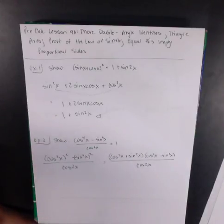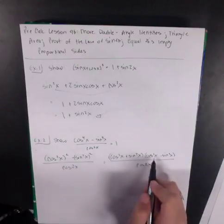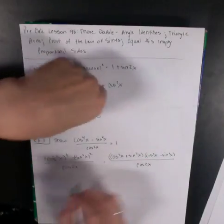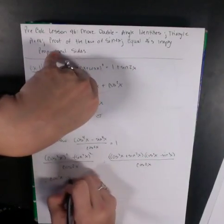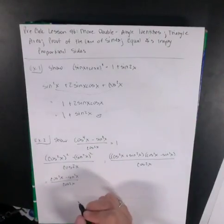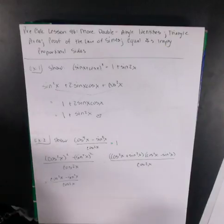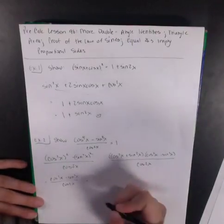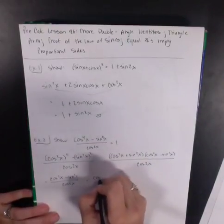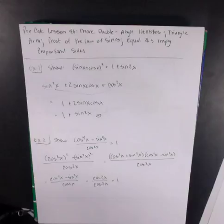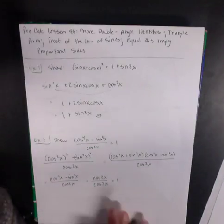Now I know that cosine squared x plus sine squared x is 1. So I'm left with cosine squared x minus sine squared x over cosine of 2x. We had three different identities for this — cosine squared x minus sine squared x equals cosine of 2x. So cosine of 2x divided by cosine of 2x is 1. Those are some more double angle identities.